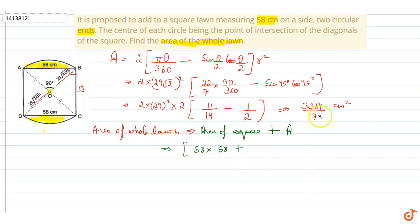This is 2 into 3364/7. Now, here we can use common 3364.